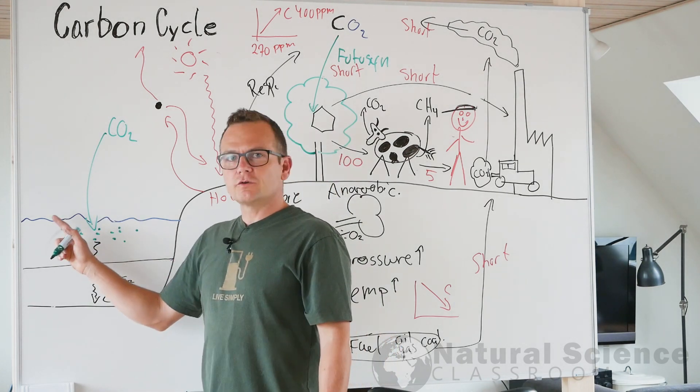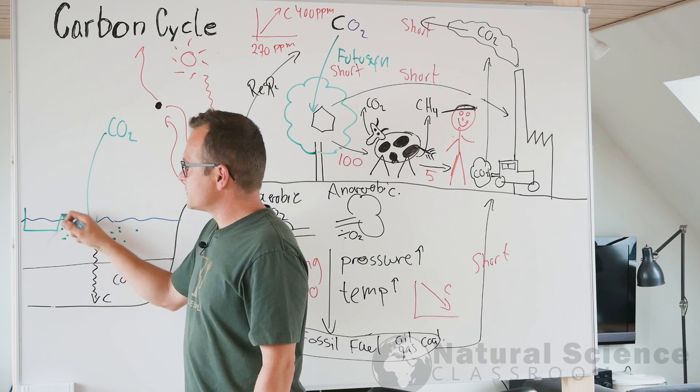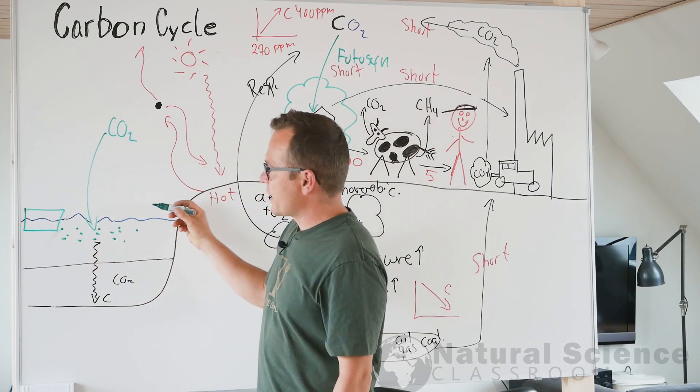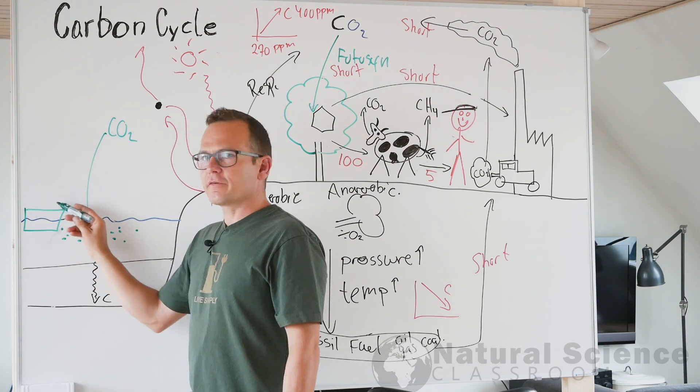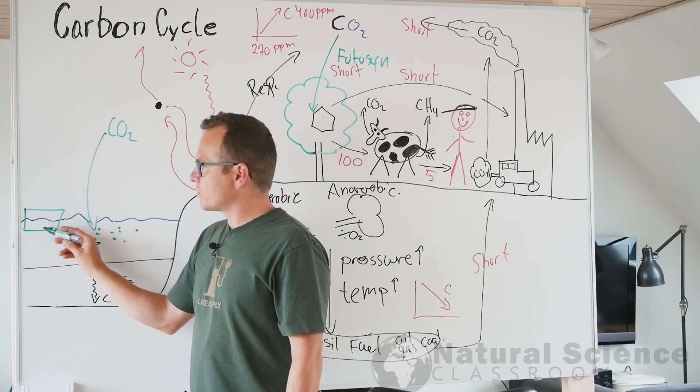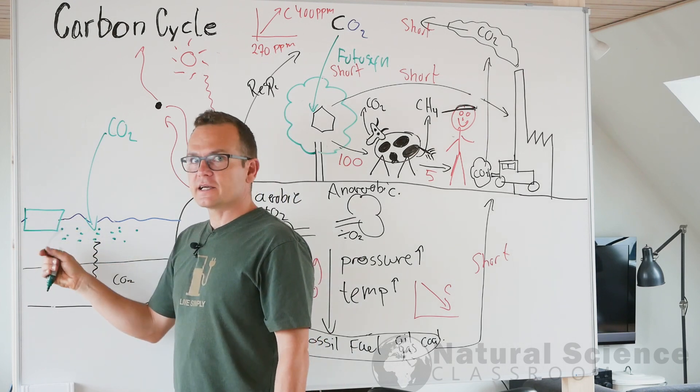So also in the ocean, we've got the North Atlantic circulation pump. And this is the Gulf Stream actually. The Gulf Stream goes up north, just south of Greenland. And around the Greenland, we'll have a lot of freezing of sea ice.